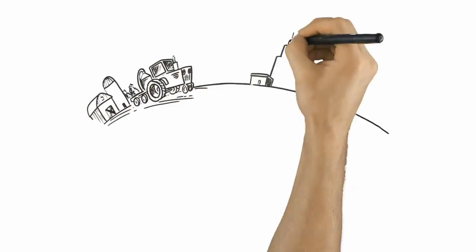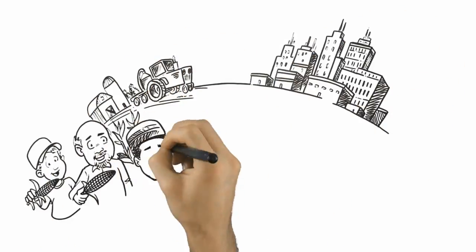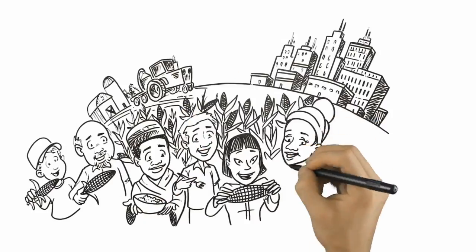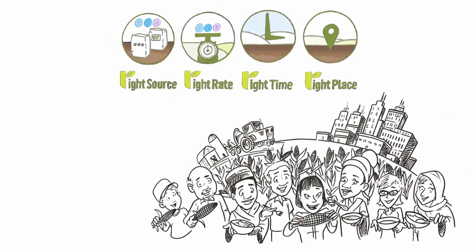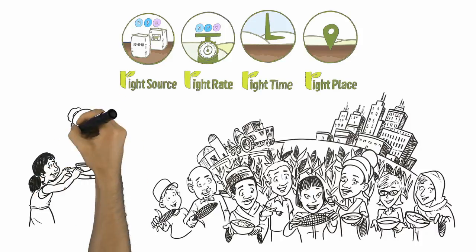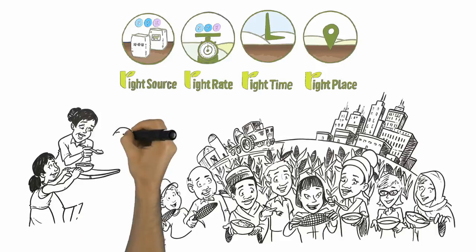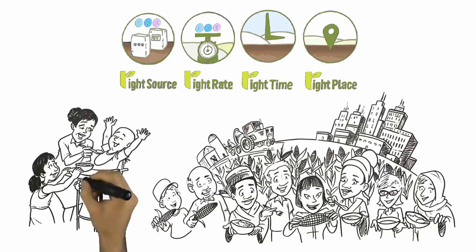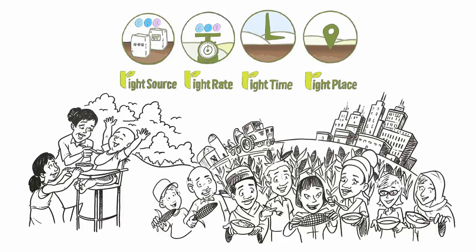Sustainably managing fields and food production is a huge responsibility that farmers accept on our behalf. Using the 4R nutrient stewardship system, growers can increase productivity, helping feed and bring economic and social benefits to communities, while also protecting the environment for future generations.